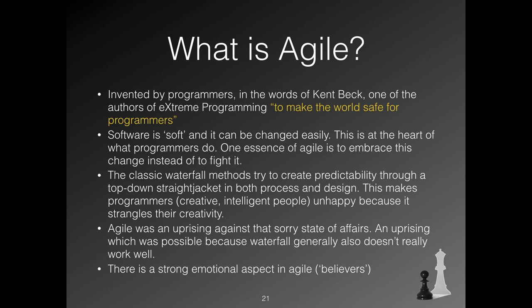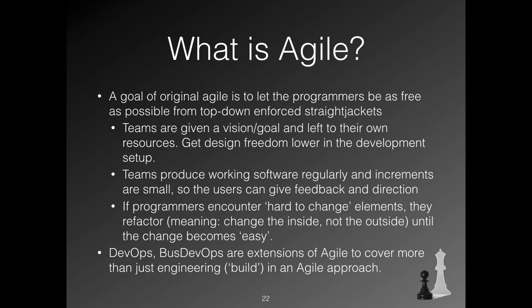One of the origins of Agile was extreme programming. In the words of one of the originators, it was meant to make the world a good place for programmers. The programmers' motivation was hurting from the fact that they were working in settings where they constantly could see how things could be better, and with less bureaucracy — but were not allowed to make things better. The programmers that created extreme programming and the Agile Manifesto created a setup where they have maximum freedom to be creative and productive. You give a team a vision, let them hash out code as quickly as they can, constantly producing iterations, and let the users interact all the time. No bureaucracy or big upfront design, but a flexible interactive setup.